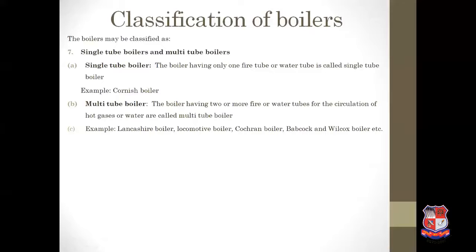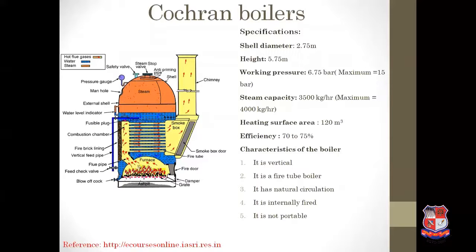Single tube boilers and multi-tube boilers. A boiler having only one fire tube or water tube is called a single tube boiler — Cornish boiler is the example. A boiler having two or more fire or water tubes for circulation of hot gases or water is called a multi-tube boiler — examples are Lancashire boiler, locomotive boiler, Cochrane boiler, and Babcock-Wilcox boiler.